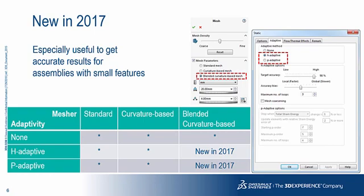Now, you can use the power of the blended curvature-based mesher and the H and P adaptive meshing at the same time. This means you have the best of both worlds, which is important if you are simulating large assemblies with smaller features and more accurate results at the same time.